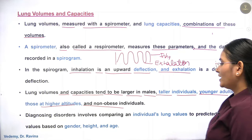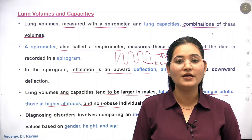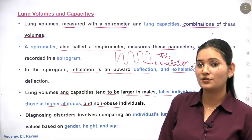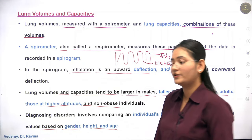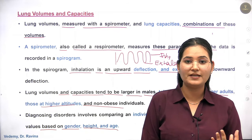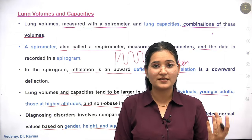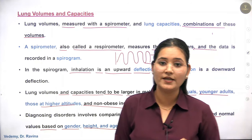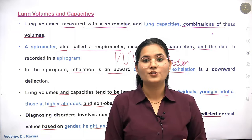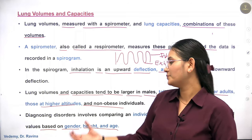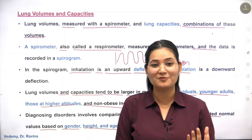You can diagnose respiratory issues from the spirogram — if there is variability in inspiration and expiration, those are basically respiratory system related disorders. Normal values are based on gender, height, and age. A younger adult will have more volume and capacity compared to an older person. When assessing abnormalities, we consider what age group and body size the person is in.